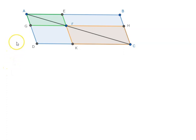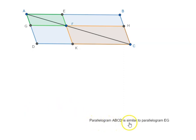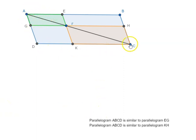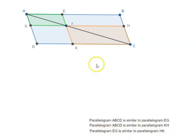So basically, when we say the diameter of a parallelogram, it means the diagonal AC. The proposition is saying that parallelogram ABCD is similar to parallelogram EG, one of the parallelograms about the diameter. The proposition also says that parallelogram ABCD is also similar to KH, the other parallelogram about the diameter, and that parallelogram EG is similar to parallelogram HK.